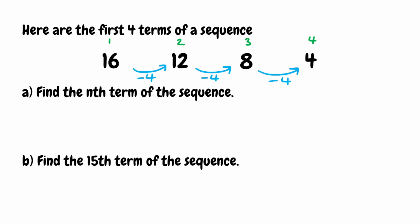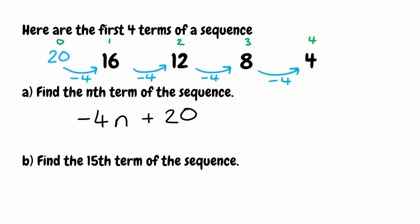Now we're looking for the nth term. The coefficient of n is the common difference — since we're taking away 4 each time, we have negative 4n. To find the rest of the expression we find term number 0: following the same rule, something take away 4 gives 16, so we do 16 plus 4, which is 20. That's what comes at the end — positive 20. So the nth term is negative 4n plus 20.